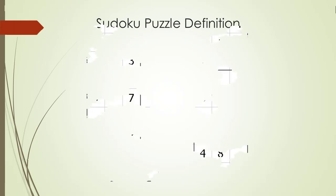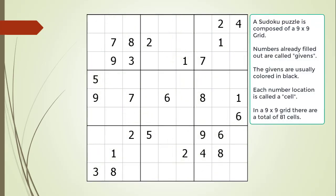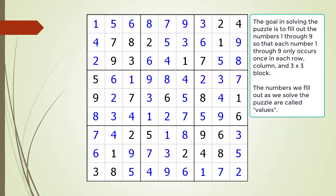In this section we are going to talk about what is a Sudoku puzzle. A Sudoku puzzle is composed of a 9x9 grid of numbers. The numbers already filled out in black are called givens. Each number location is called a cell. In a 9x9 grid, there are 81 cells. The goal in solving the puzzle is to fill out the numbers 1 through 9, so that each number 1 through 9 only occurs once in each row, column, and 3x3 block.